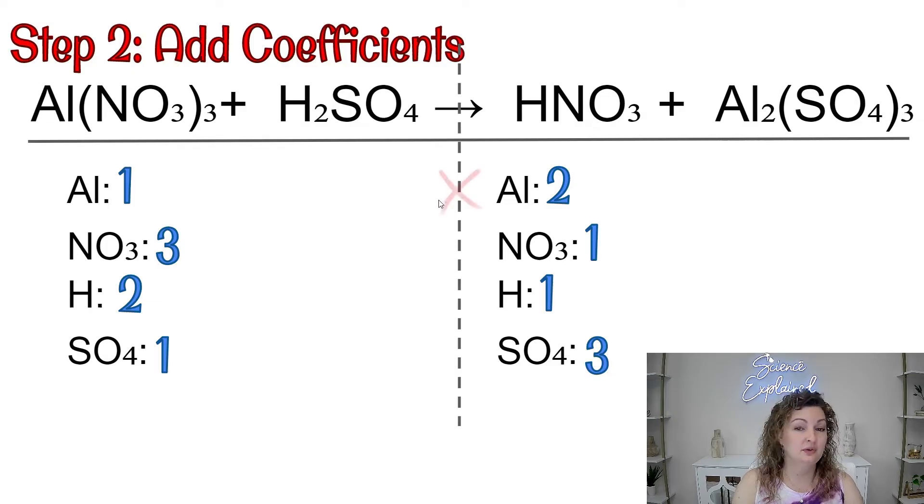One and two. Nope. Three and one. Nope. Two and one. Nope. One and three. Nope. Nothing is balanced. So we're kind of starting with a clean slate here. Now we need to figure out where to start. Helpful tip. If you can, do not start with hydrogen or oxygen if you ever have those alone or separate. We're just going to start at the top because it's aluminum and that's completely fine.